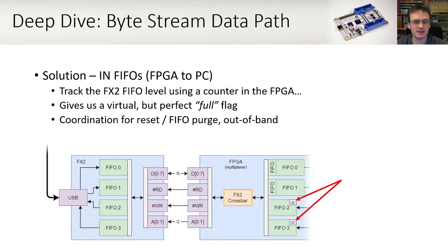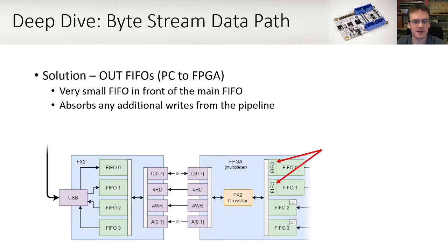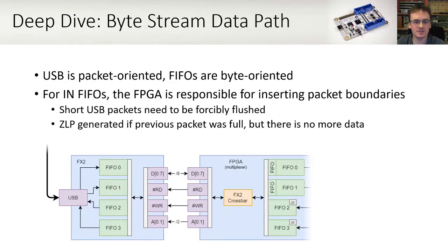Whitequark has come up with a different solution for each of the IN versus OUT FIFOs, both of which are very elegant. The IN FIFO solution adds a counter to the IN FIFO in the FPGA, keeping track of the FX2 FIFO's level. If the FX2 FIFO on the left has 5 bytes in it, then this counter has the value 5. This gives us a virtual but perfect full flag, meaning that the pipelining and delays can be handled nicely. This does however require out-of-band coordination for reset and FIFO purge, which is handled anyway for resetting the applet. The OUT FIFO solution adds a very small FIFO before the main FIFO in the FPGA. This FIFO is large enough to absorb any additional data that might be in-flight in the pipeline, even if the main FIFO is already full.